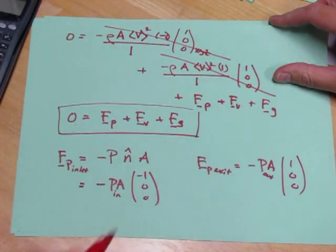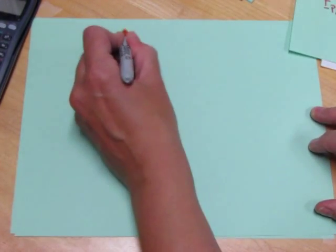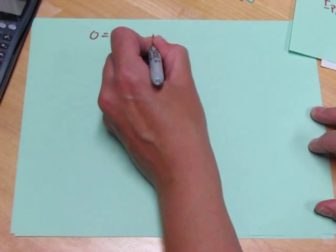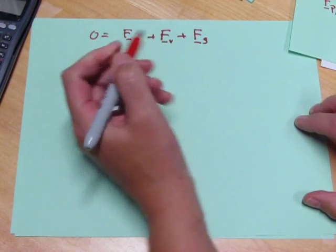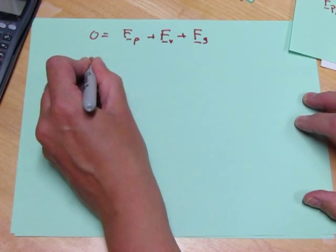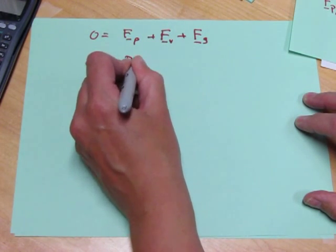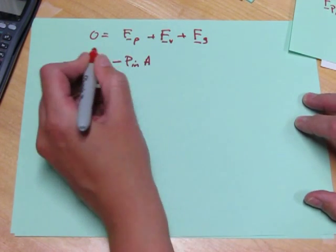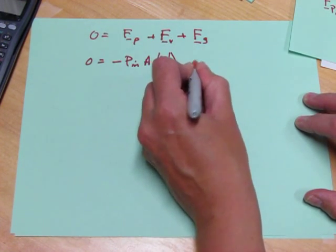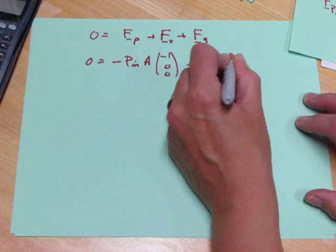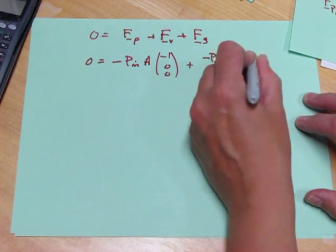With these results, we can now combine them into this equation, the macroscopic momentum balance equation, and solve. So we start with 0 equals FP plus force on the walls due to viscosity plus FG, and we get 0 equals minus P in A times minus 1, 0, 0, plus minus P out A times 1, 0, 0.